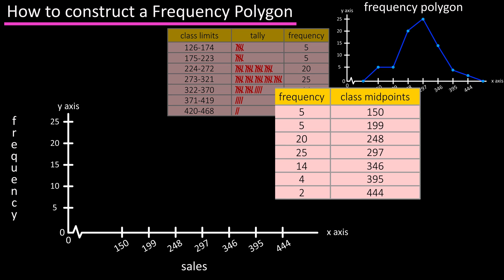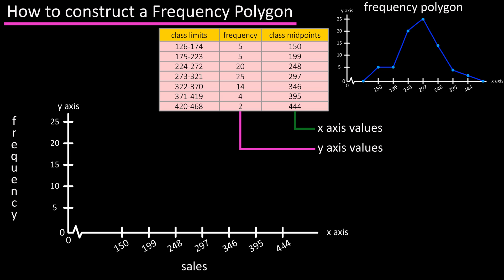Next we need to plot the points for each of the classes. We're going to use the midpoints as the x-axis or horizontal values and the frequencies for the y-axis or vertical values. So for class 1 we have a frequency of 5 and a class midpoint of 150. We find this value on the graph where these two values intersect and plot a point there. For class 2 we have a frequency of 5 and a midpoint of 199. Again, mark the point of intersection with a dot and you would continue this process for the remaining 5 classes.